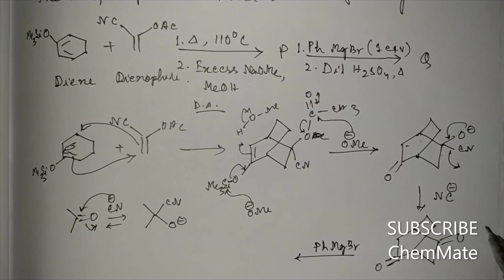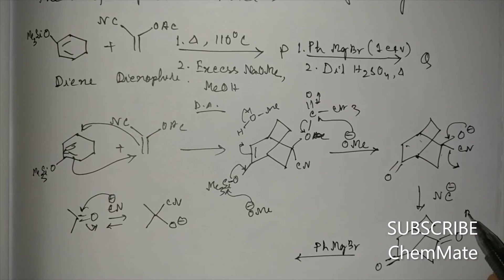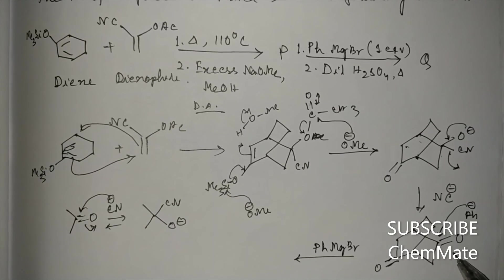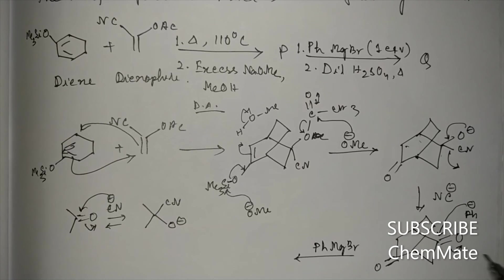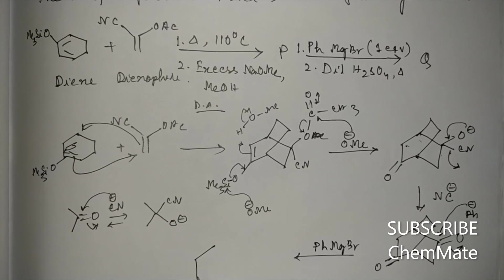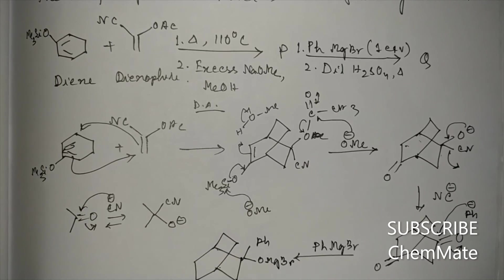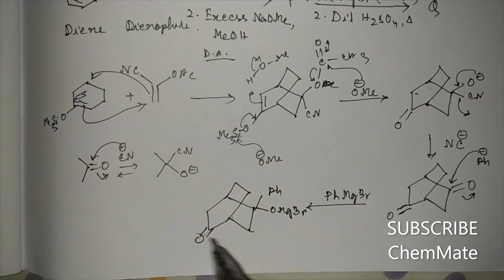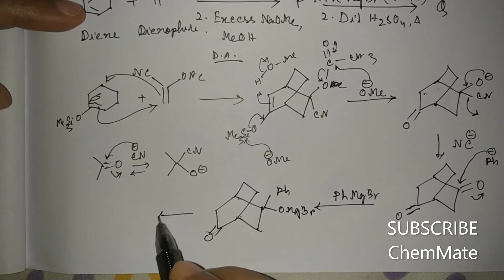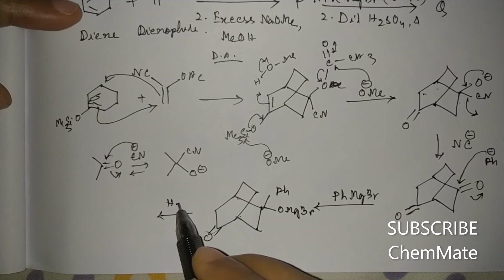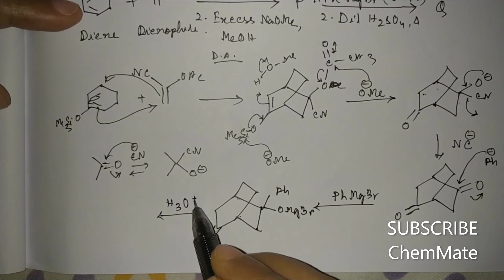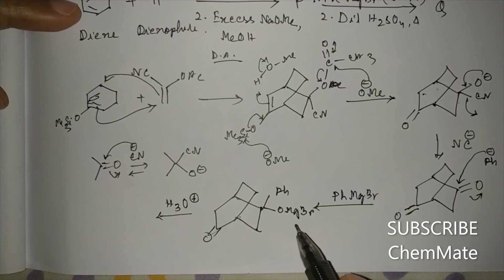Treatment with PhMgBr (one equivalent): Ph-minus attacks the carbonyl group. Exo attack is more favorable than endo attack. After taking a proton, the product has an OH group. Treatment with dilute H2SO4 protonates the alkoxide to give the alcohol.